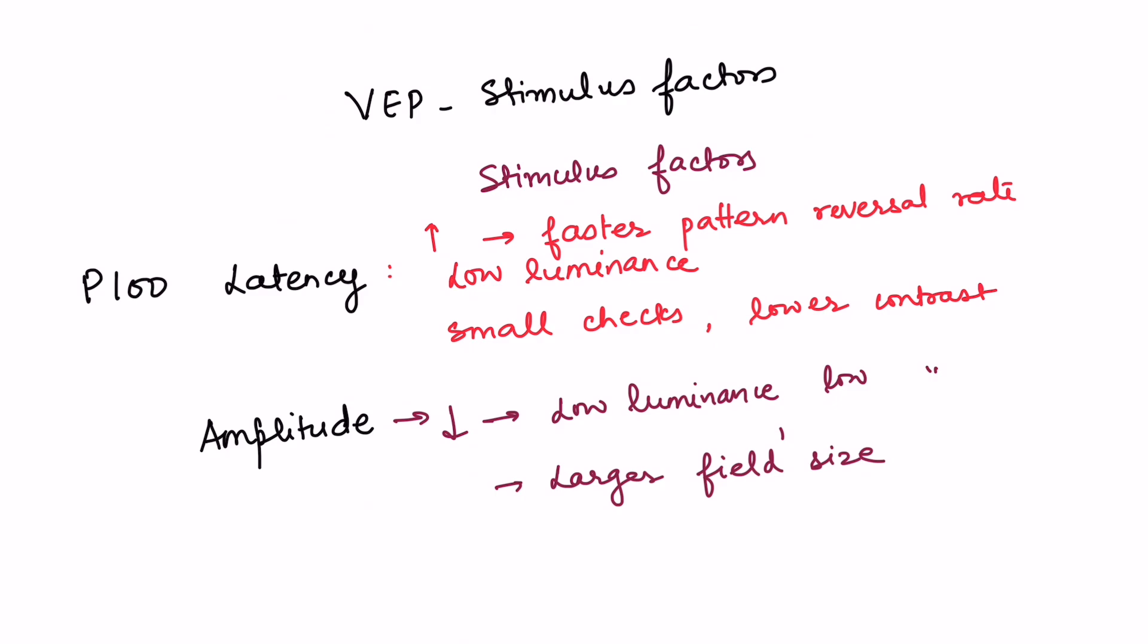Now there are various stimulus factors also which affect the P100 latency and amplitude. We should remember that these stimulus factors need to be controlled properly to get proper P100 latency and amplitude. For example, P100 latency can be increased if the pattern reversal rate of the checkerboard stimulus is faster, if the luminance is lower, or the size of the checks which are there are smaller, or contrast is also lower. So in that case, P100 latency which we will obtain will be more. So we have to be careful that these stimulus factors are consistent as required, otherwise the interpretation will become difficult.